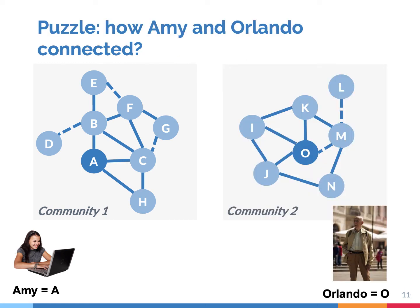So then we have a puzzle. If we live in communities, how is it possible that we are connected to random strangers within just five steps? How can Amy reach Orlando if they navigate in entirely different clusters of social ties?